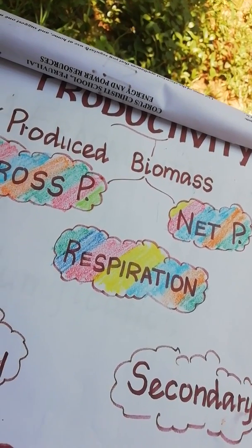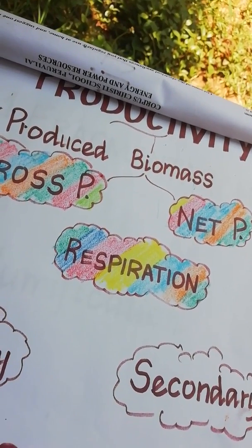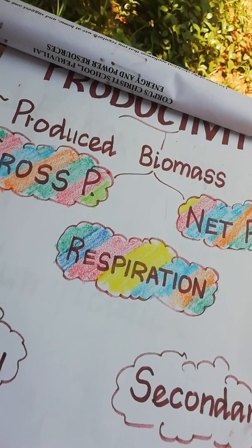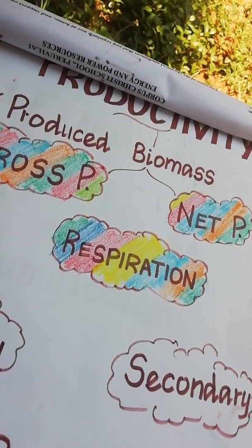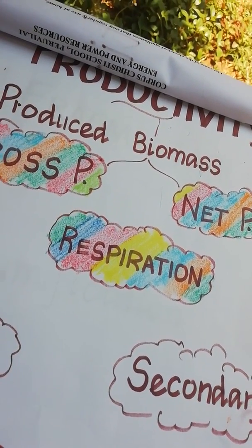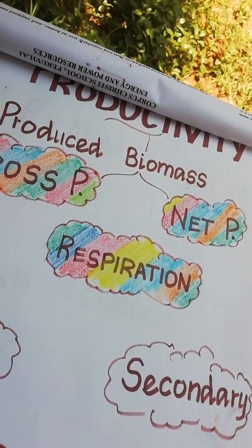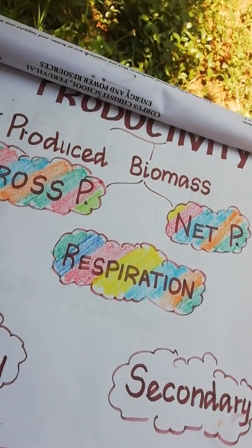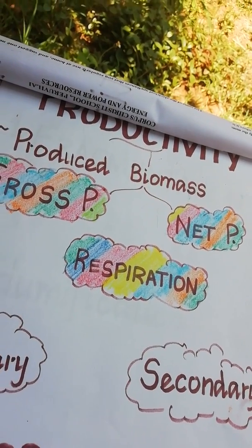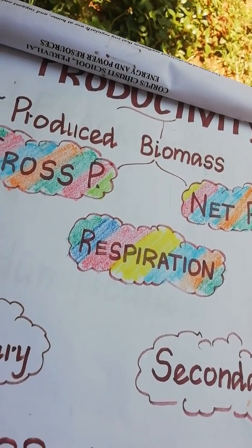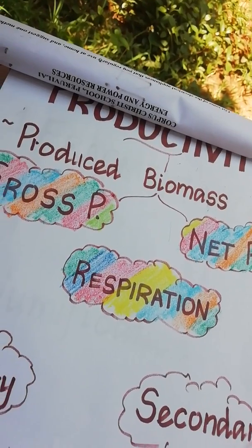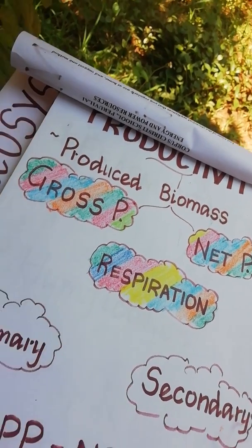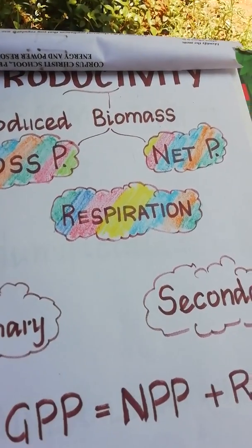Productivity indirectly shows the production of how much biomass, how much weight an organism has gained — for example, how much weight a plant has gained after a particular time. That shows how much productivity has been done by the organism. In productivity we have two major classifications: gross productivity and net productivity.